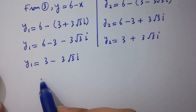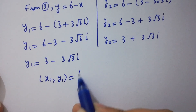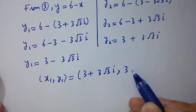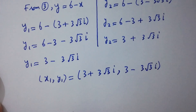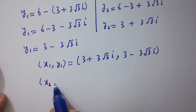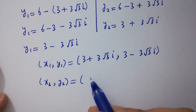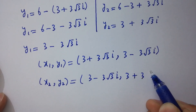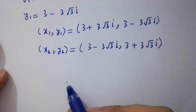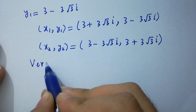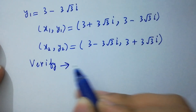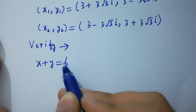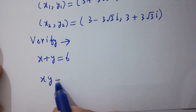So we have the solution pairs: x₁ equals 3 plus 3 square root of 3 i and y₁ equals 3 minus 3 square root of 3 i. And x₂ equals 3 minus 3 square root of 3 i and y₂ equals 3 plus 3 square root of 3 i. Now let's verify x plus y equals 6 and x times y equals 36.